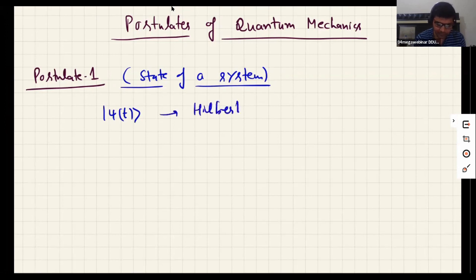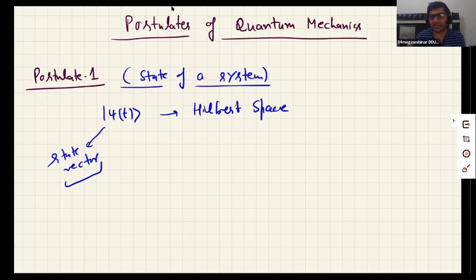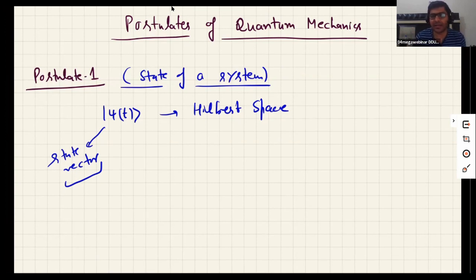This is the so-called state vector, the symbol we use to describe the physical state of a system at any instant of time T. The specialty of |ψ(t)⟩ is that it is an abstract state vector in Hilbert space — it contains all the information regarding the physical state: position, momentum, energy, and various other physical variables. That is the first postulate.